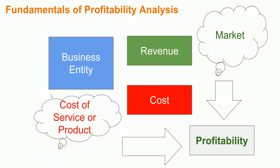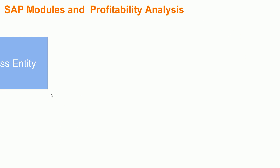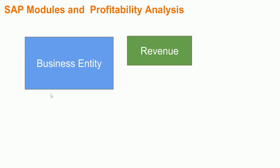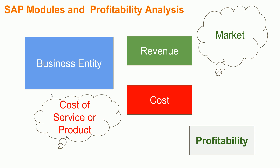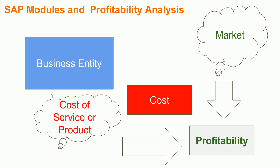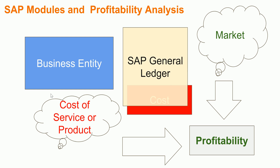When it comes to the business entity, revenue and cost in the market result in profitability. Revenue and cost are recorded in SAP through the General Ledger module — all GL accounts are either cost or revenue accounts. So all measurement of your revenue as well as cost is recorded to the General Ledger.